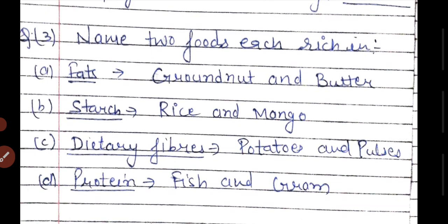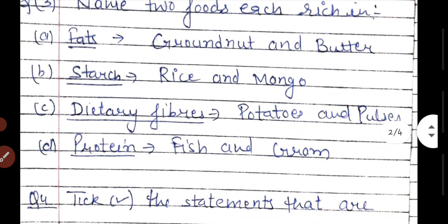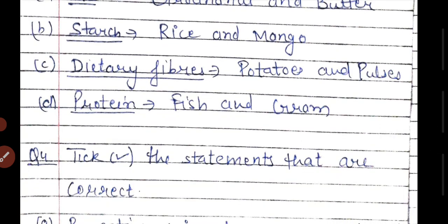The next question is: name two foods rich in fat. Fat is found in groundnut and butter. For starch, we get it from rice and mango. For dietary fiber, we can get it from potatoes — from potatoes we get starch and dietary fiber.